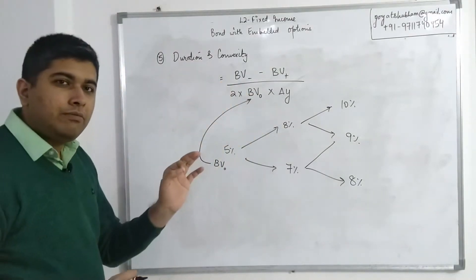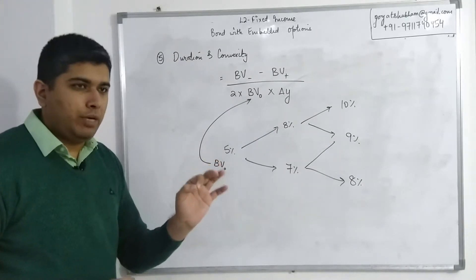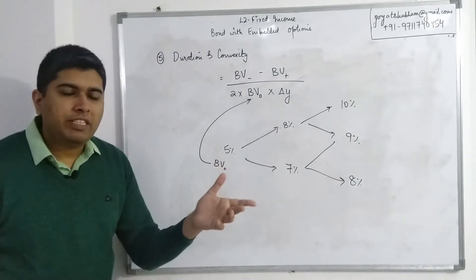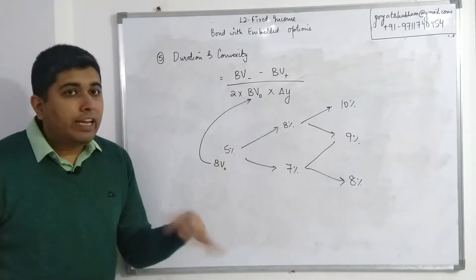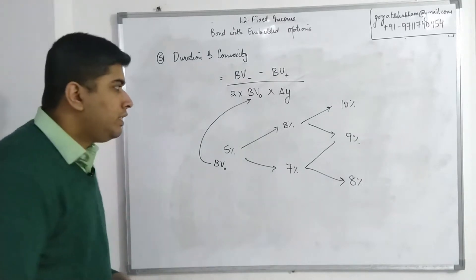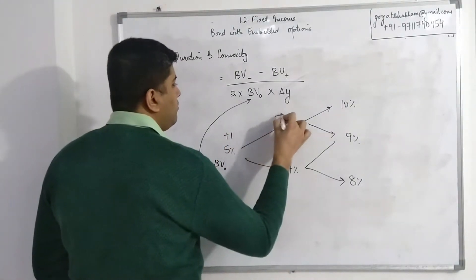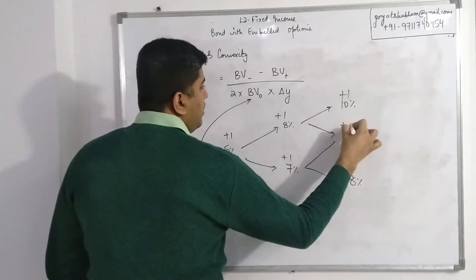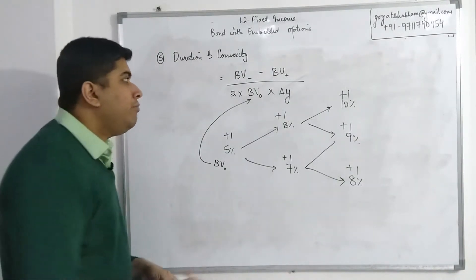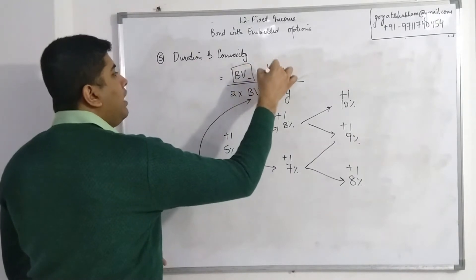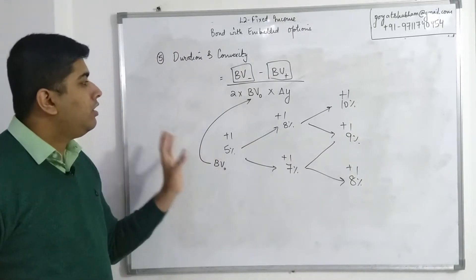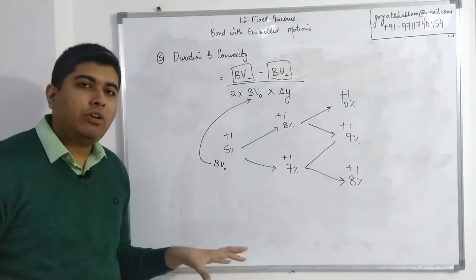If I need duration, at Level 1 what we used to do is we used to change the yield by a certain percentage. We used to first increase it, so let's say the yield is already 5%, I increase it by 1%, 100 basis points, make it 6% and see the value. Then I decrease it by 100 basis points, make it 4% and see the value. I'm going to do the same thing here as well. The only difference is I'm going to change everything by plus 1, and then I'm going to change everything by minus 1. That will give me the value of book value when the yield is decreased and book value when the yield is increased.